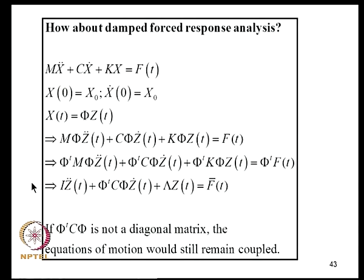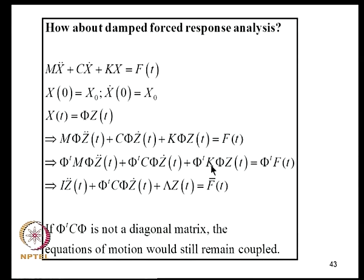When damping is present, using T = phi (undamped modal matrix) and pre-multiplying by phi^T gives phi^T M phi = I, phi^T K phi = Lambda, but leaves phi^T C phi. There is no a priori reason for phi^T C phi to be diagonal. If it is not diagonal, the equations remain coupled through the damping matrix, so the transformation only helps if the damping matrix is of a special form.